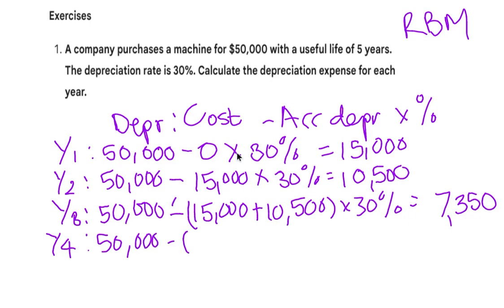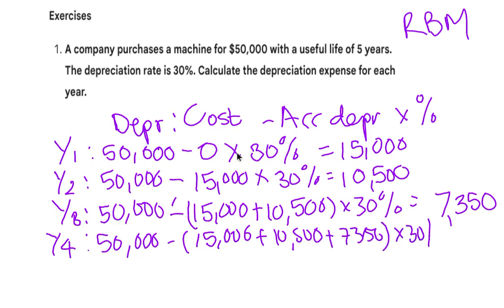For year four, we say fifty thousand minus the accumulated depreciation for all the years — fifteen thousand plus ten thousand five hundred plus seven thousand three hundred and fifty — multiplied by thirty percent. The total accumulated depreciation is thirty-two thousand eight hundred and fifty. So fifty thousand minus thirty-two thousand eight hundred and fifty gives us seventeen thousand one hundred and fifty, multiplied by thirty percent, which equals five thousand one hundred and forty-five for year four.